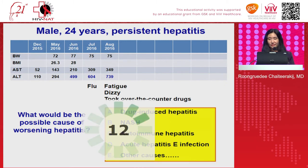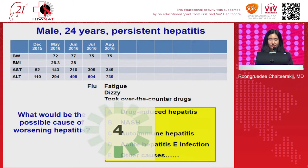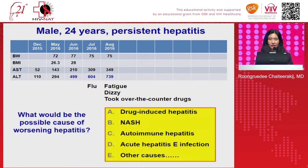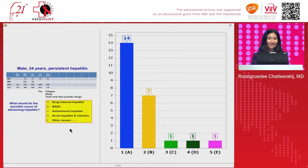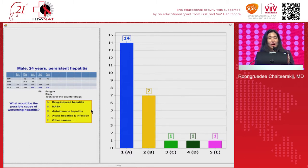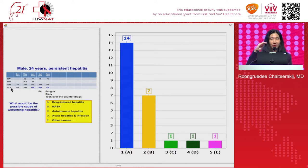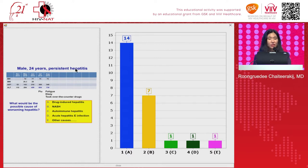Most of you thought this is drug-induced hepatitis, and some thought NASH. For NASH, the level of ALT elevation is usually less than five times the upper limit, and none have elevation greater than ten times. In this patient, the ALT level is more than ten times. So NASH alone may not be the single cause of this ALT elevation at this point — but drug-induced hepatitis was possible.